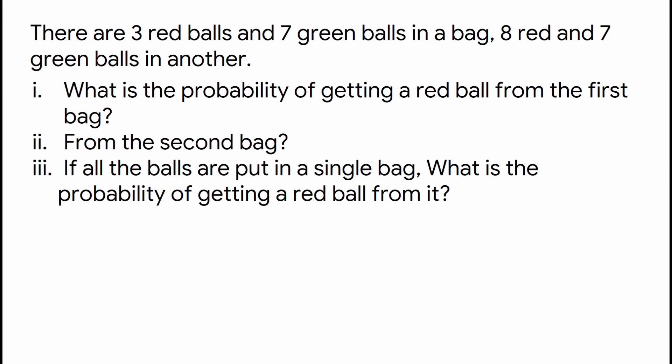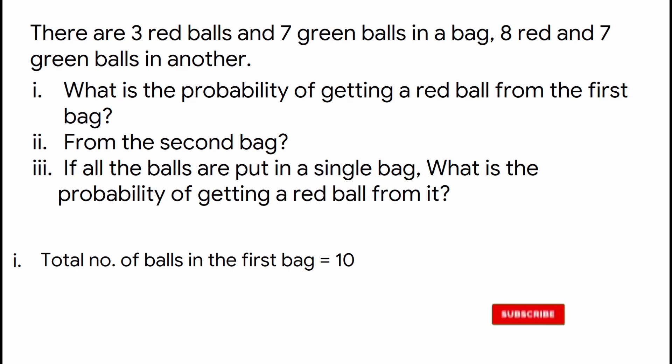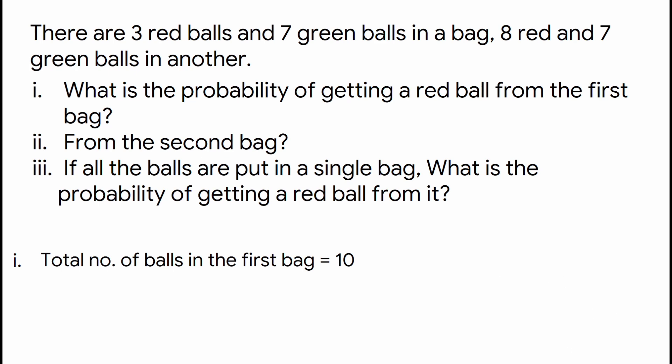Three plus seven — the total number of balls in the first bag is ten. The number of red balls are three. The probability of red balls is equal to the number of red balls divided by the total number of balls. So the probability of red balls from the first bag is equal to 3 by 10.